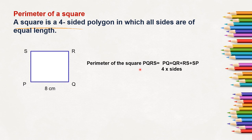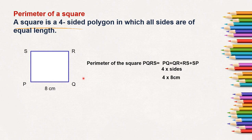So the perimeter of the square equals PQ plus QR plus RS plus SP. Instead of adding like this, since it has 4 sides — it is a 4-sided polygon — we can do 4 into the side, that is 8 cm. So 4 into 8 cm: instead of adding 8 four times, we multiply by 4. 8 times 4 is 32 cm. So the perimeter of square PQRS is equal to 32 cm.